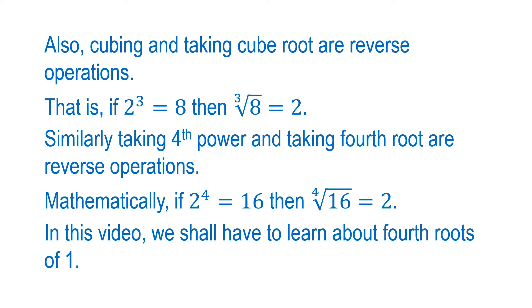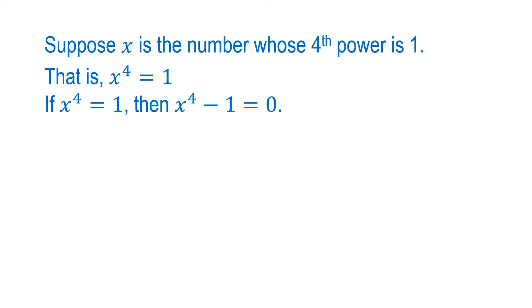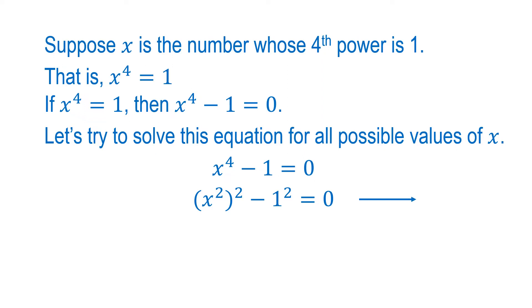In this video, we shall learn about fourth roots of 1. Suppose x is the number whose fourth power is 1 — that is, x raised to power 4 is 1. If x raised to power 4 is 1, then x raised to power 4 minus 1 is 0. Let's try to solve this equation for all possible values of x. x⁴ − 1 = 0. This gives (x²)² − 1² = 0. Name it equation number 1.